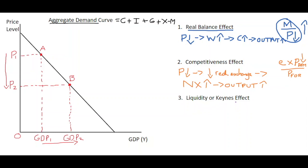Finally, we have the liquidity or Keynes effect. We use the Fisher equation, which says that the nominal interest rate — the interest rate quoted for a mortgage or savings account — is equal to R, the real interest rate, plus inflation. If the price level is going down, then for any given level of the real interest rate, your nominal interest rate will also drop. So when price levels fall, interest rates tend to fall as well. In our economy, the nominal interest rate dropping has a positive impact on consumption and investment.